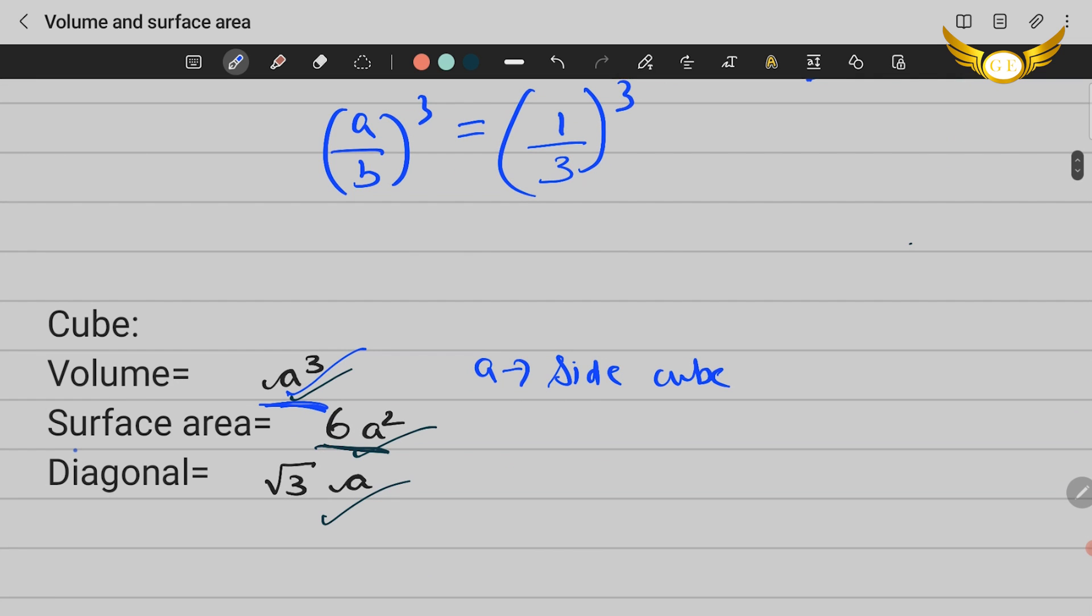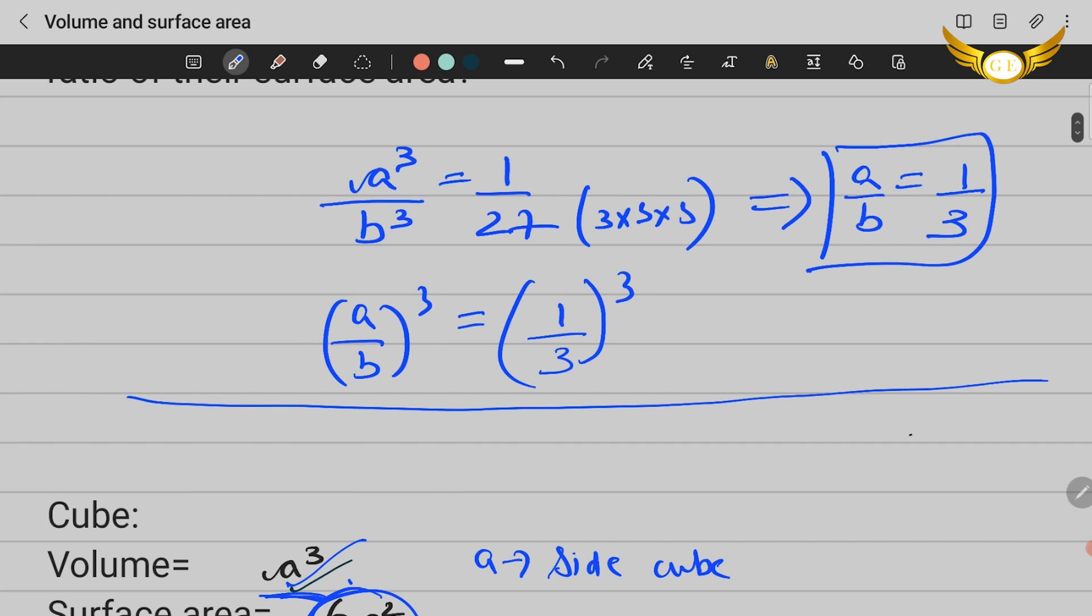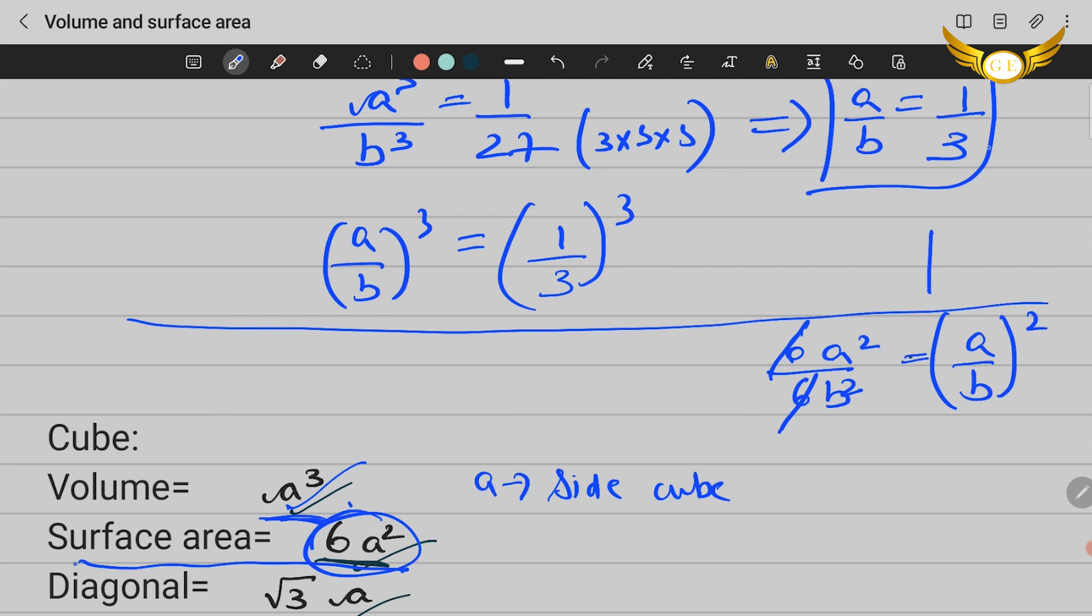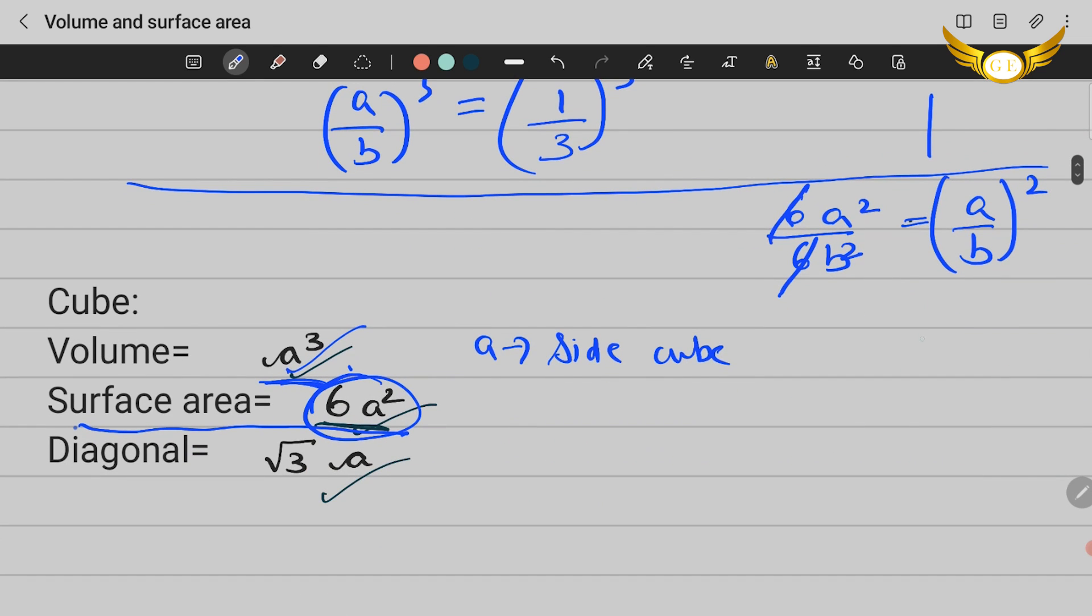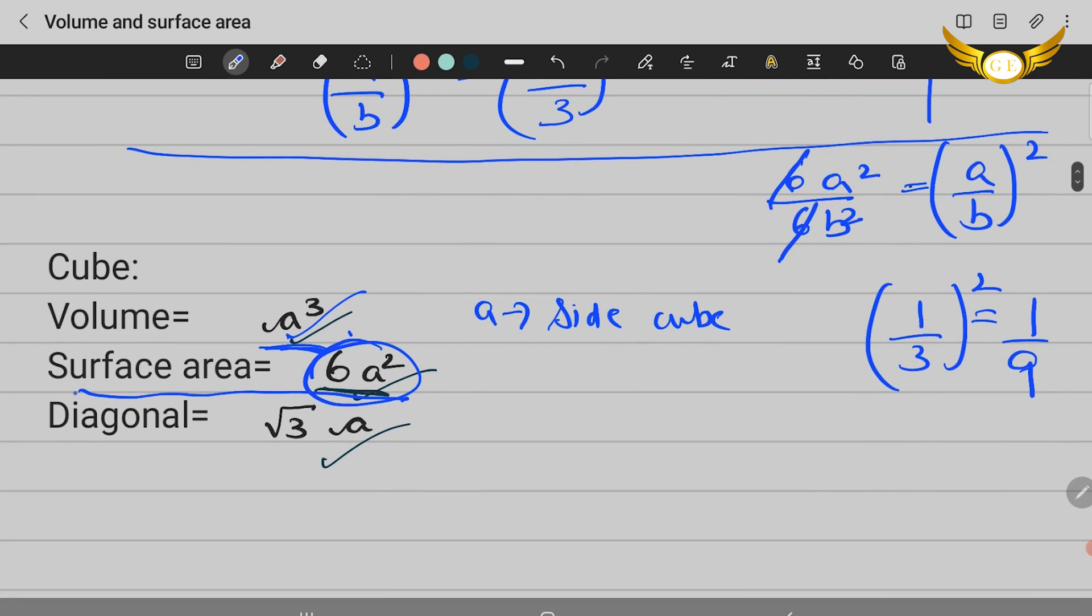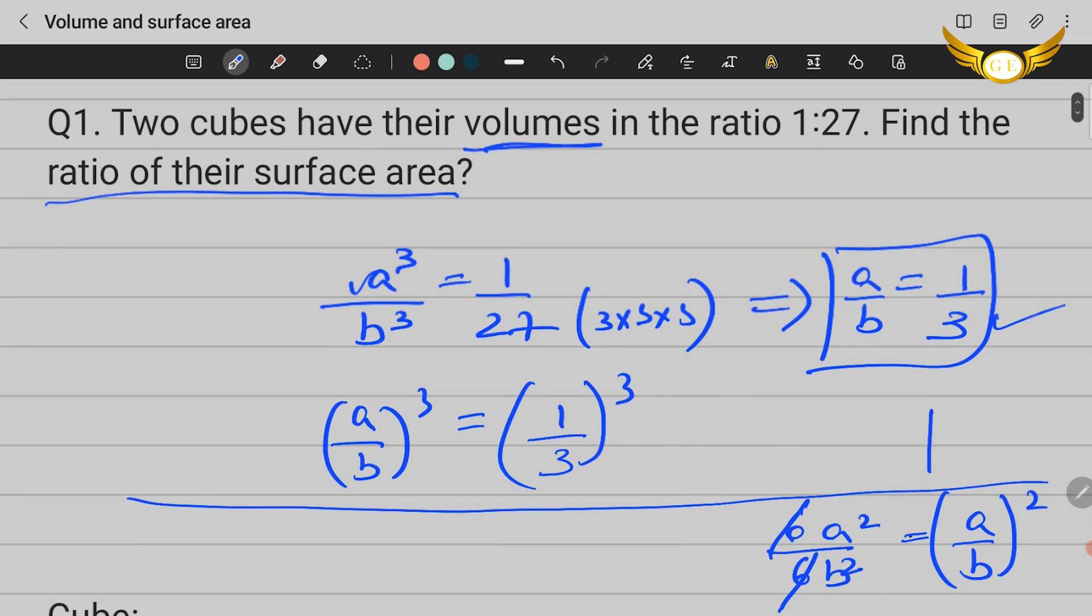Now for the surface area, we have the formula as 6a². So let's find the surface area. We'll write 6a²/6b², cancel it out, it becomes (a/b)². We found a/b over here, so just take it down: (1/3)² = 1/9. So the ratio of their surface area is 1 is to 9. Therefore, 1 to 9 is your answer.